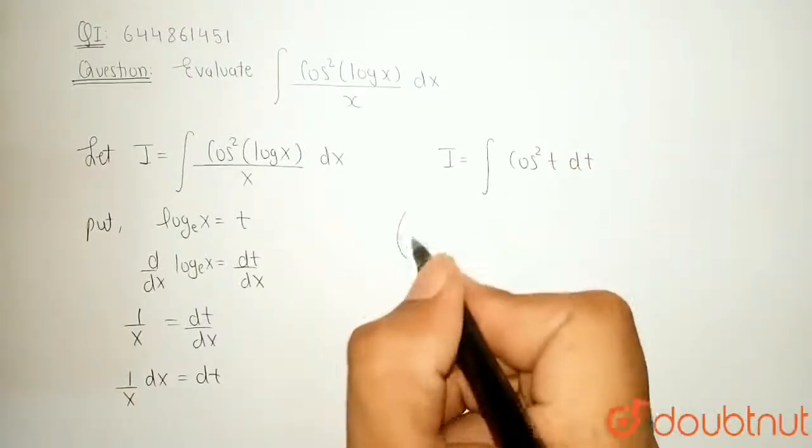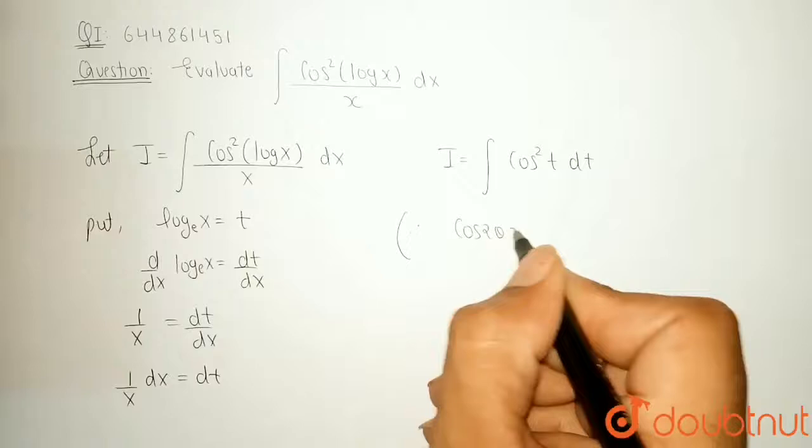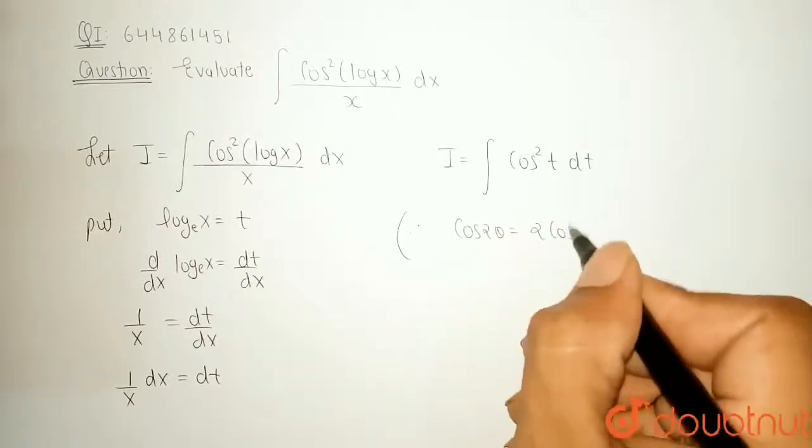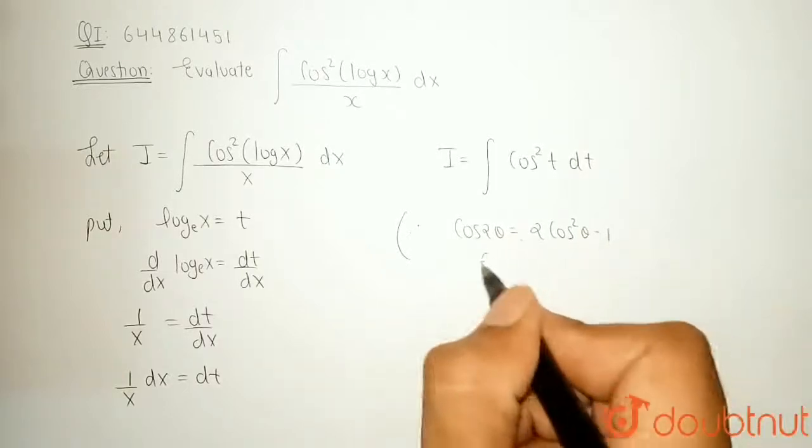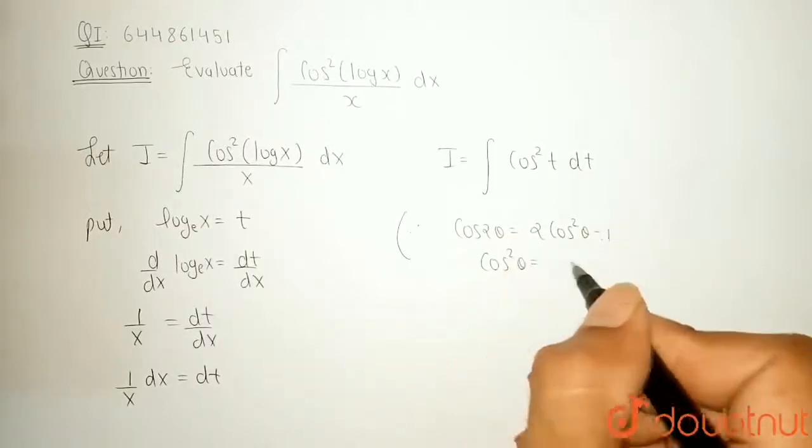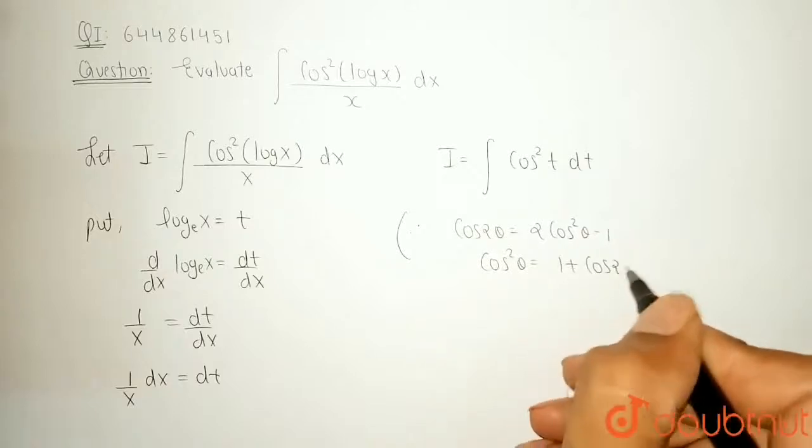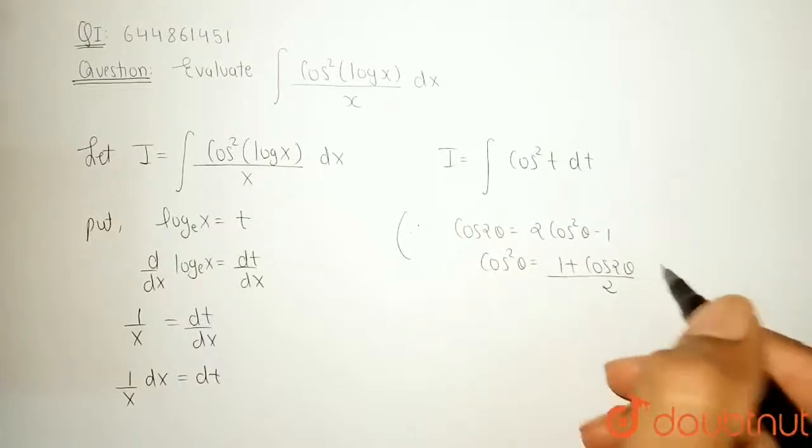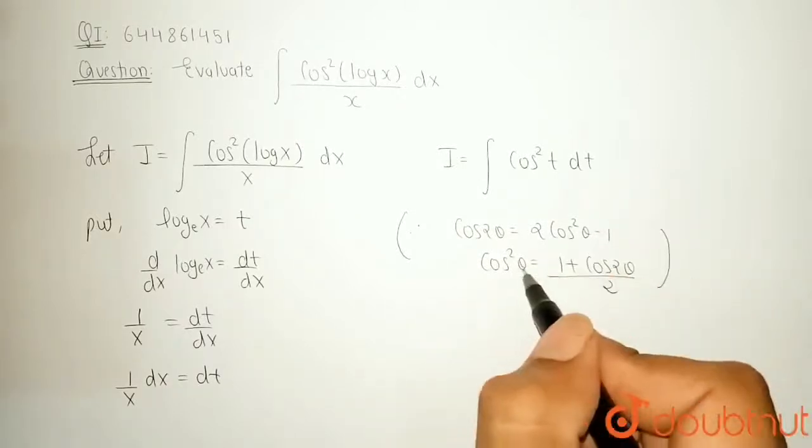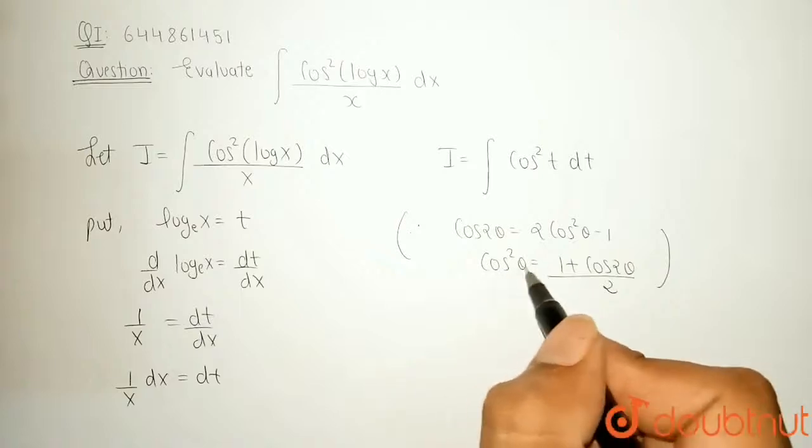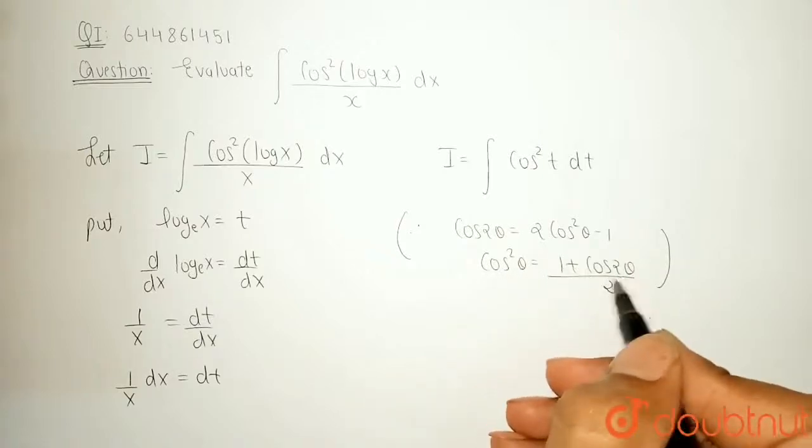I can use the identity. What is the identity? Cos 2 theta is equal to 2 cos square theta minus 1. That means, the value of cos square theta is 1 plus cos 2 theta upon 2. If I can put theta is equal to t, then cos square t becomes 1 plus cos 2t upon 2.